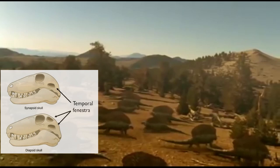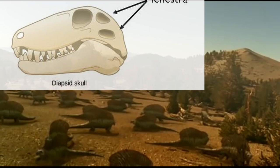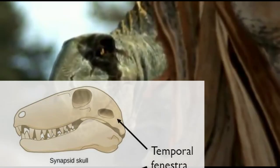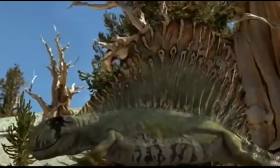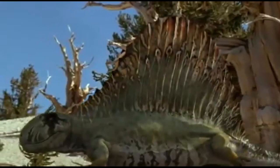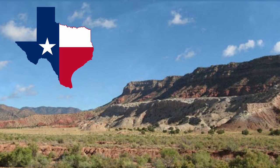We've got the synapsids and the diapsids. Synapsids have one temporal opening — mammals came from these guys. We've got things like Dimetrodon; those dorsal spines were likely used for thermal regulation. Fossils for these guys are found nearby in the red beds of Texas and Oklahoma.